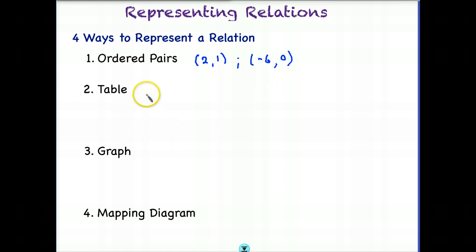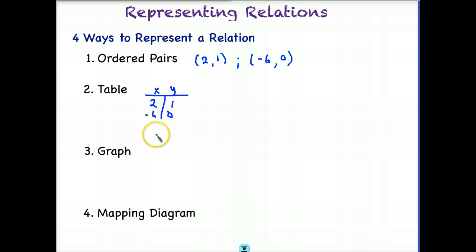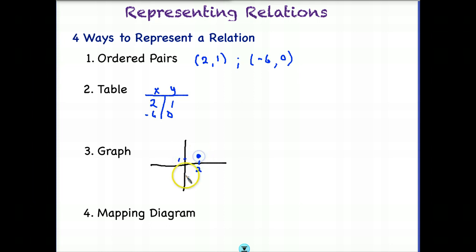We can also see relations in a table. We've seen that already — we list the number 2 here, the number 1 here. The number negative 6 and 0. 2 and 1 form a relation; negative 6 and 0 form a relation. We can also see those in a graph graphically. If you have a graph and we plot our points: 2 and 1 is right here, and negative 6 comes all the way out here and 0 would be right here. So there are our two points represented graphically — this is a relation.